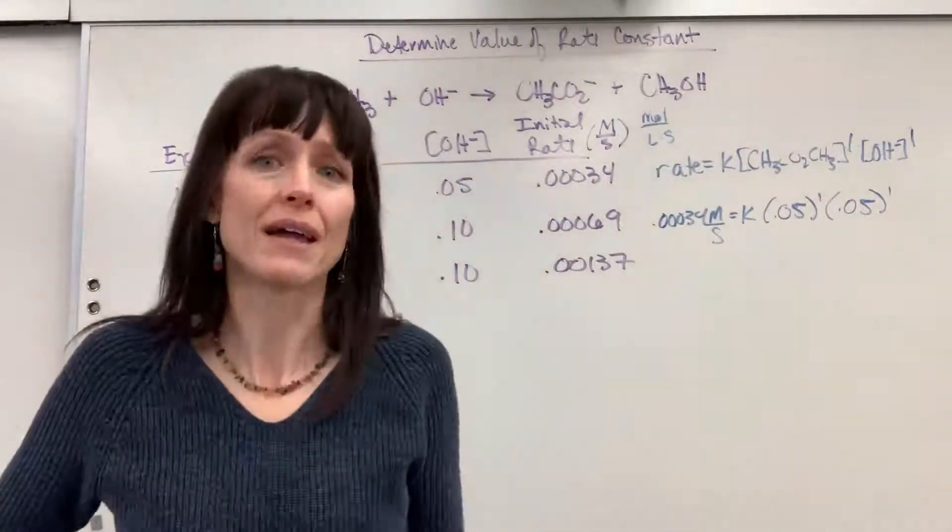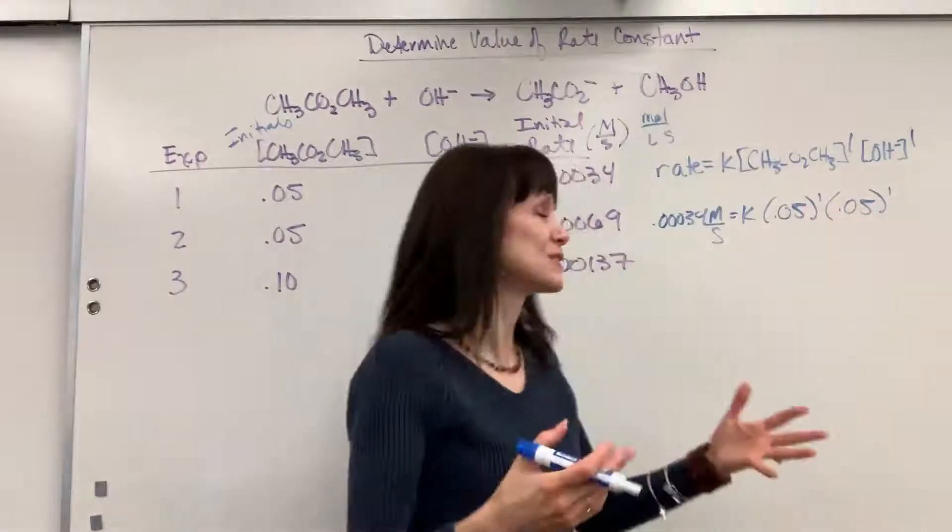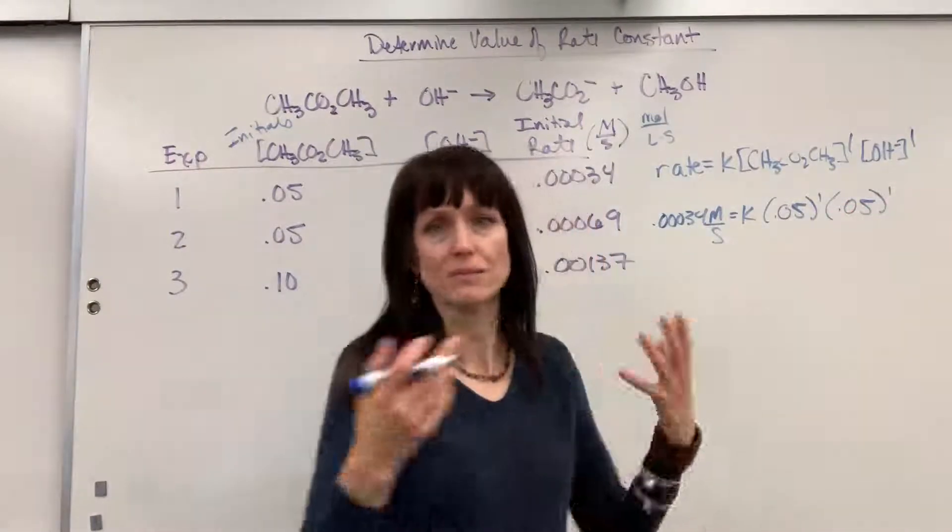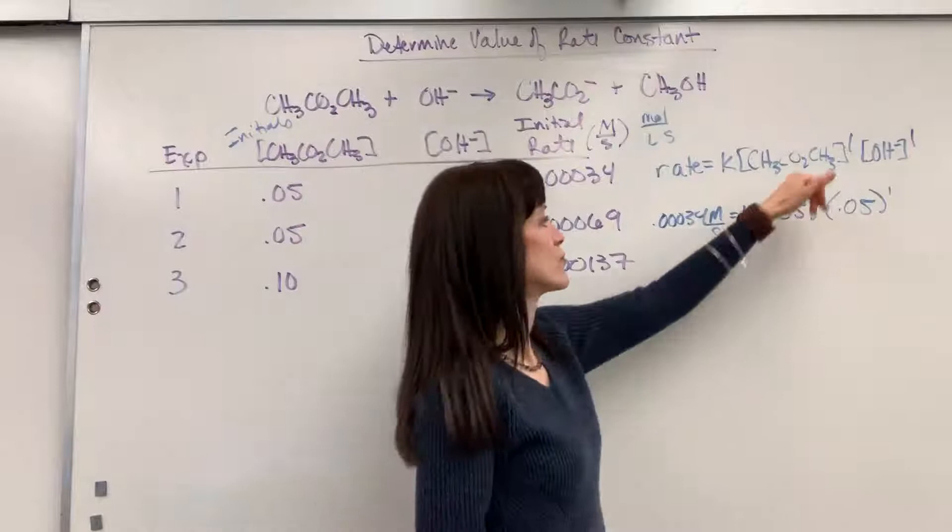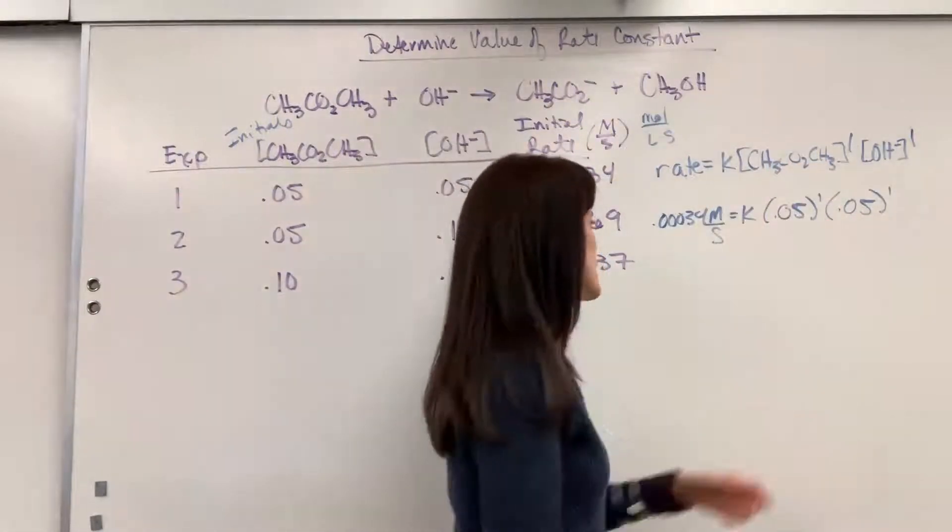Now those orders treat them mathematically like exponents. So 0.05 raised to the 1 is 0.05. 0.05 raised to the 1 is 0.05. So we've got 0.05 times 0.05.